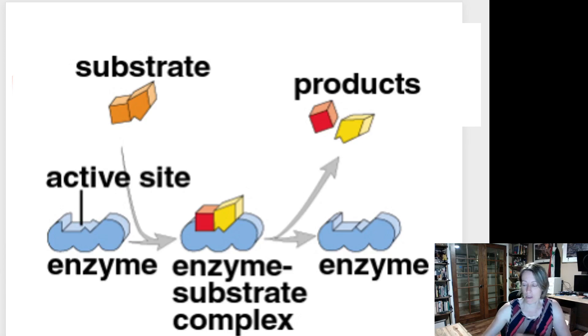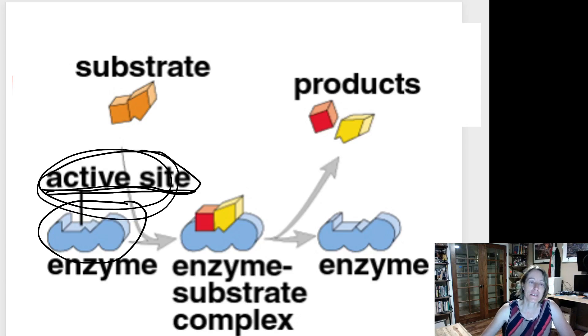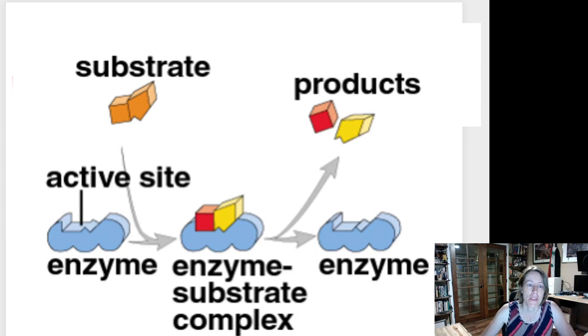Every enzyme molecule has a special zone on its surface called the active site, and this is the most important part of the enzyme. You can see on this diagram that the active site is this little kind of notch or nook or crevice on the surface of the enzyme.